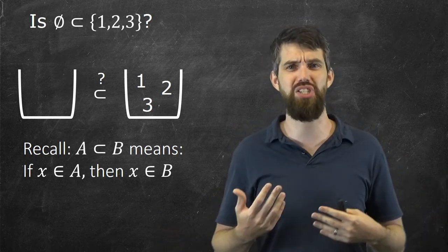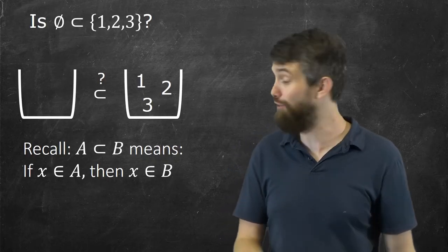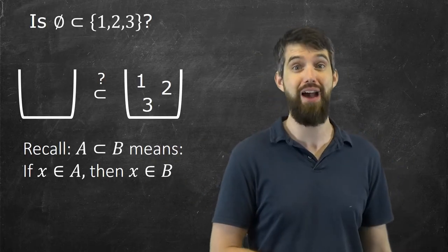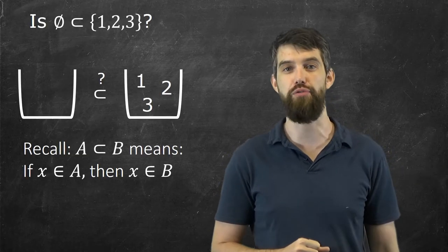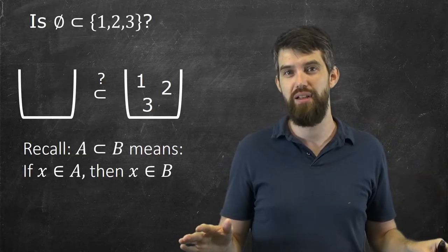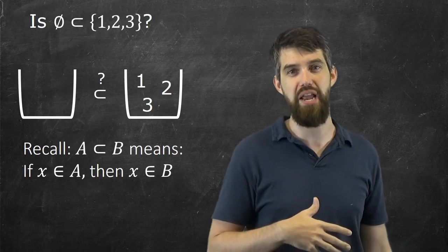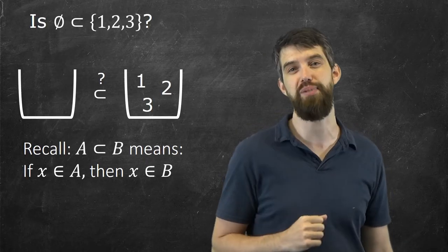Or another way to think about it is it's certainly not false, right? If it was false that A was a subset of B, you'd have to say there was something in the empty set that wasn't in the set {1, 2, 3}. That's clearly not the case. So if it's false that it's not a subset, it's true that it is a subset.